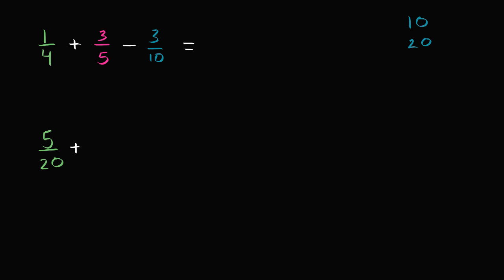Then we want to think about what happens to 3/5 if I write it as something over 20. Well, to go in the denominator from 5 to 20, you have to multiply by 4. So you have to multiply the numerator by 4 as well. So 3 times 4 is going to be equal to 12.